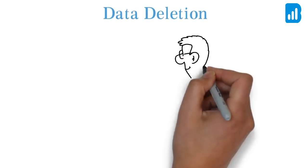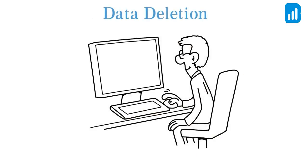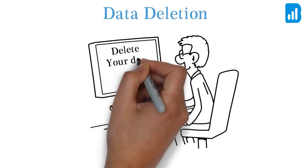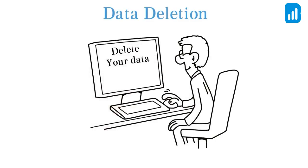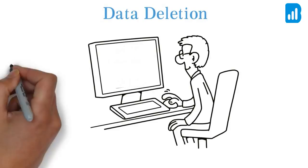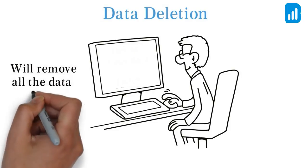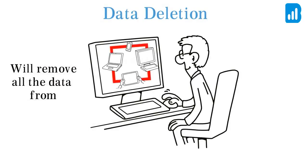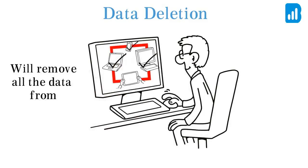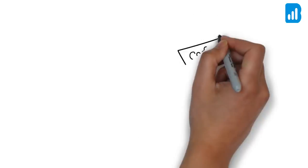Data Deletion: You can remotely wipe off all the data from the system at any point in time, and this functionality is available in the desktop app. Deleting the company will remove all the data from the PC, server, and from the mobile app instantaneously.